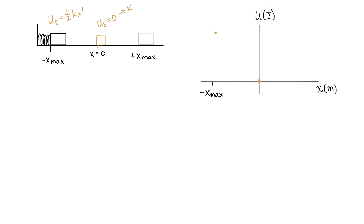So we start our graph over to the left of the y-axis at negative x-max, where we have the greatest elastic potential energy. By the time we reach the equilibrium position, all of that elastic potential energy is gone. We're going to draw from that starting point toward the equilibrium point, but we need to think about the slope: should it be a straight line, or curved — and if curved, concave up or concave down?